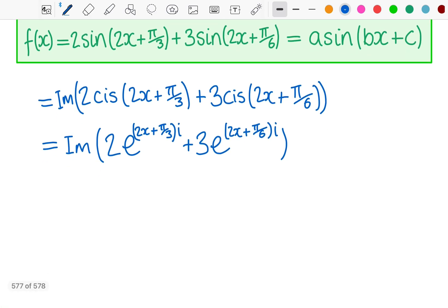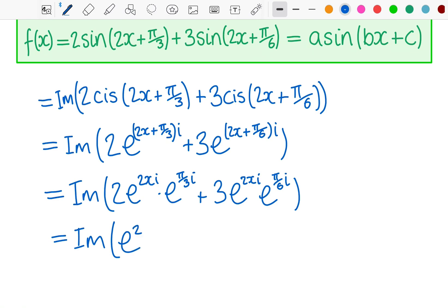Then what we start to see is we can use some of our exponent rules. Our addition of exponents rule means I can split them and multiply. I'm going to do the same thing in the other expression. The reason I do that is because now I see e^(2xi) in both parts.